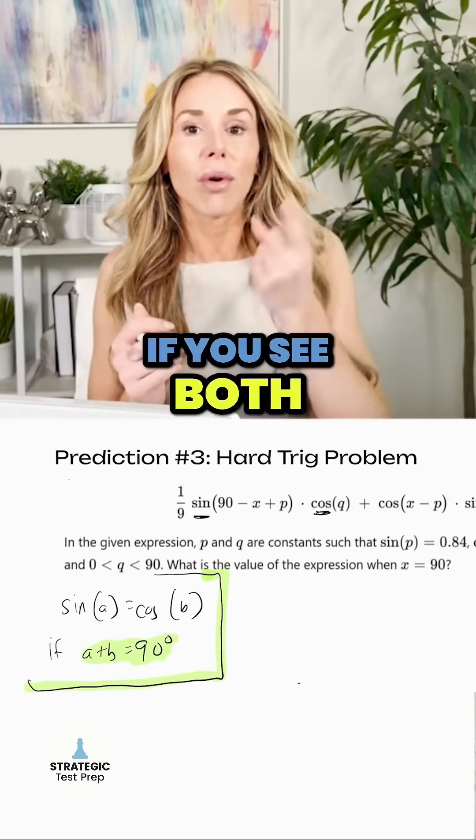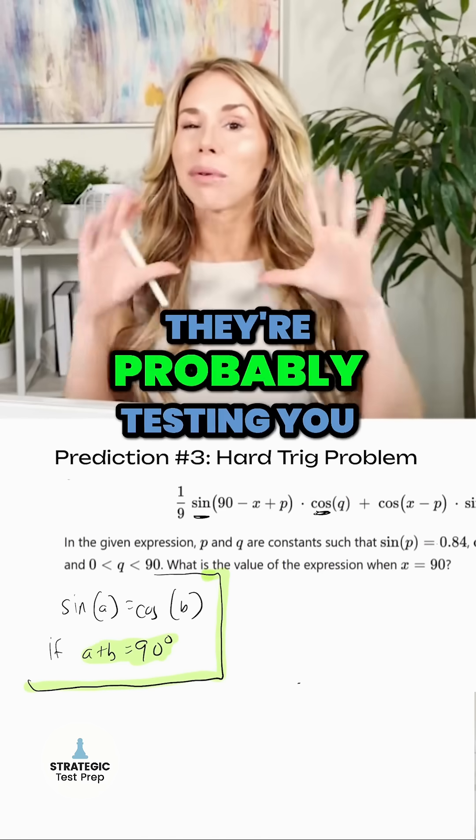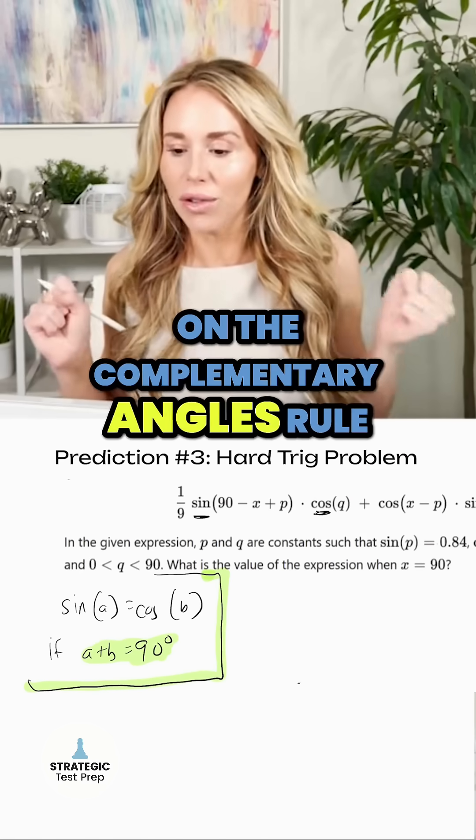Rule of thumb, on the SAT, if you see both a sine and a cosine in the same problem, they're probably testing you on the complementary angles rule. Let's read the problem.